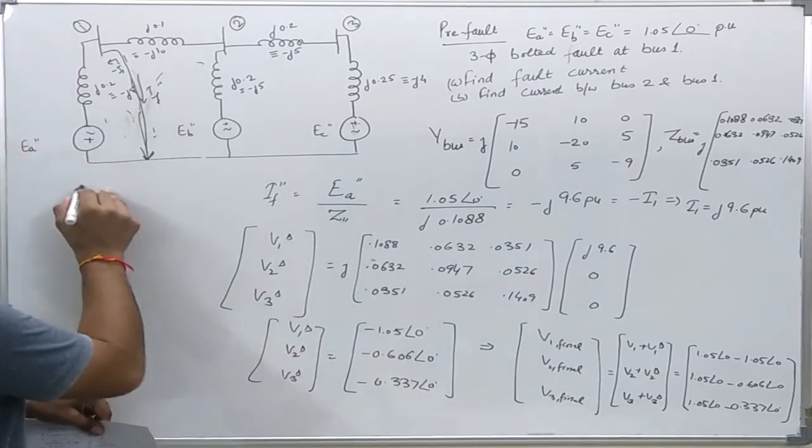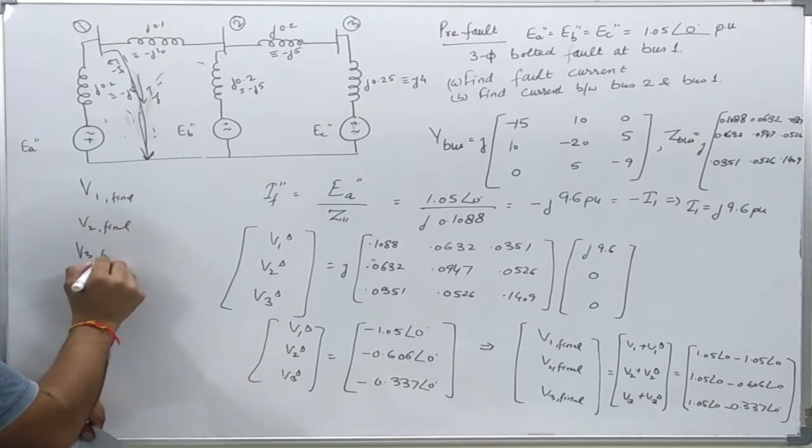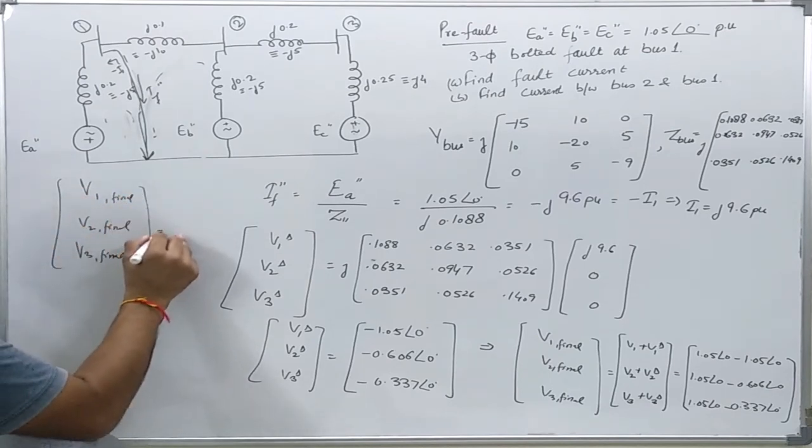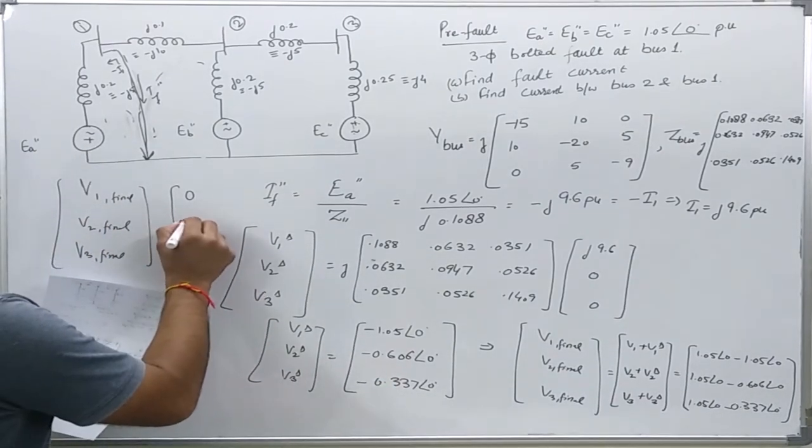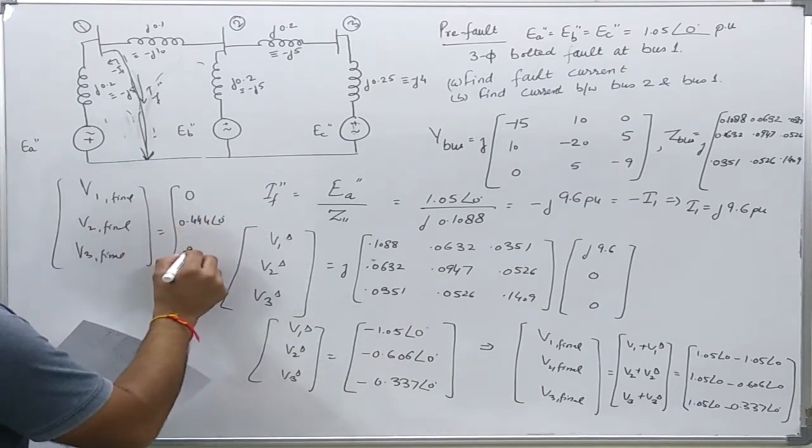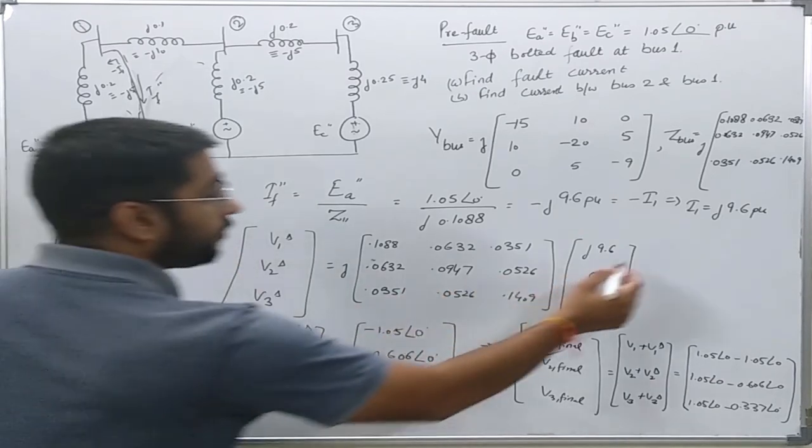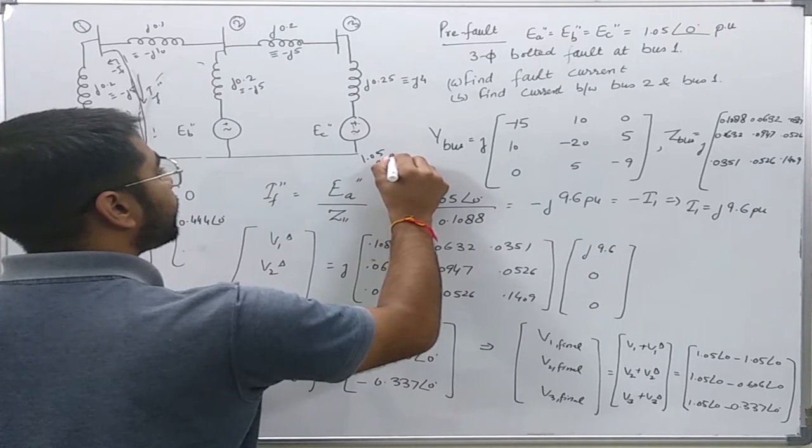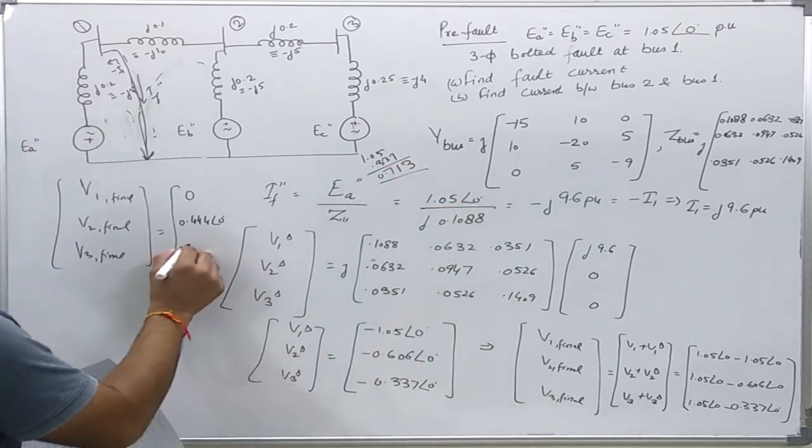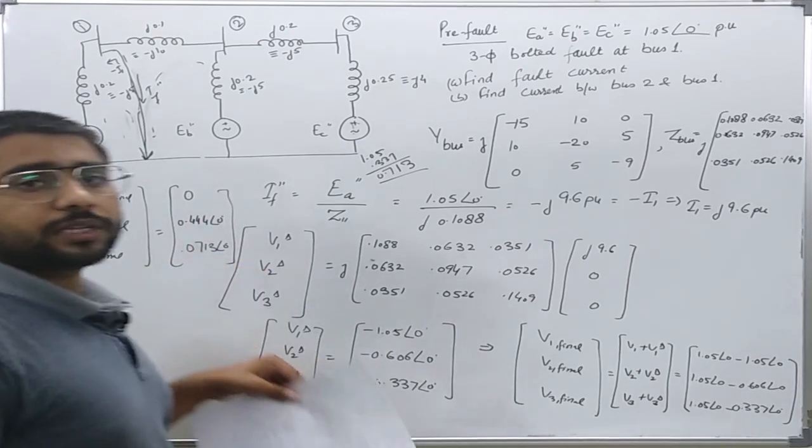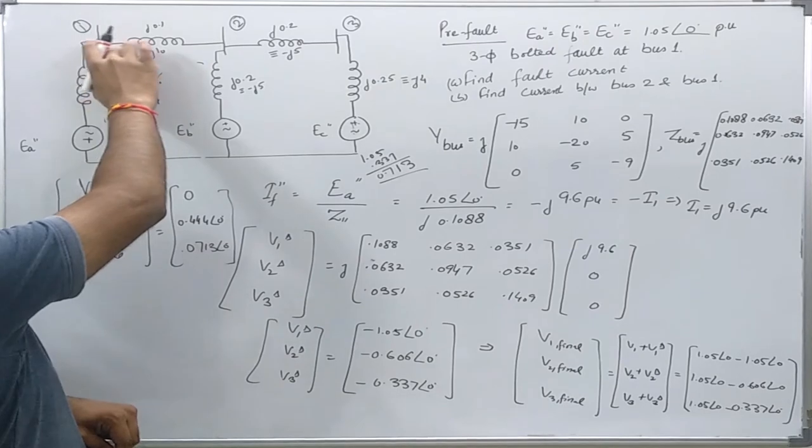So from this I can easily find the final values of V1, V2, V3 equals 0, 0.444∠0° per unit, and 0.713∠0°. Voltage at bus 1 will be 0 because it is shorted to the reference.